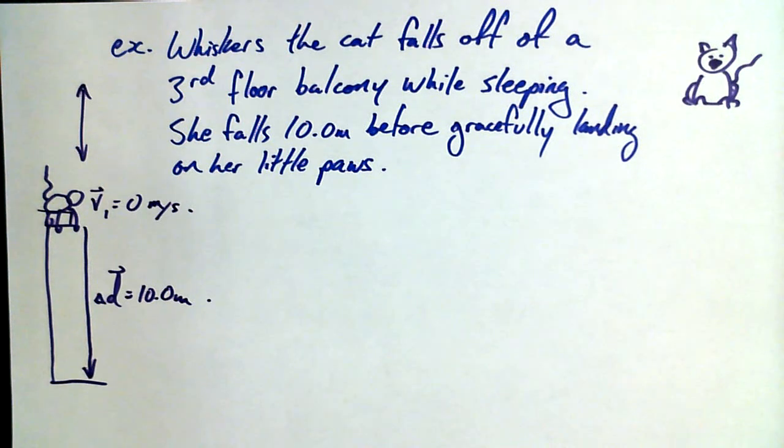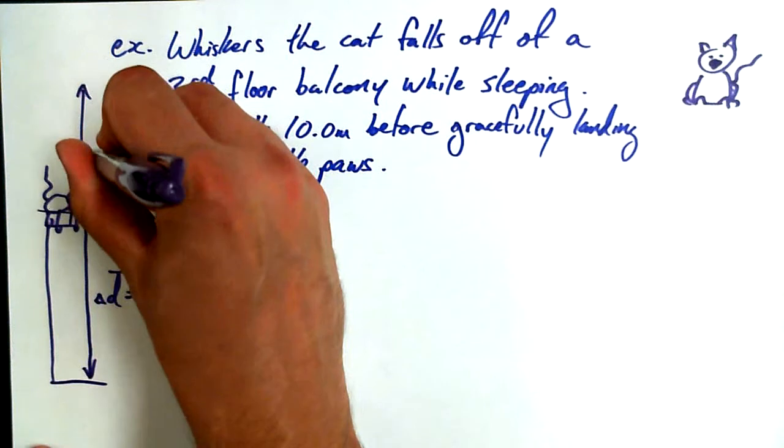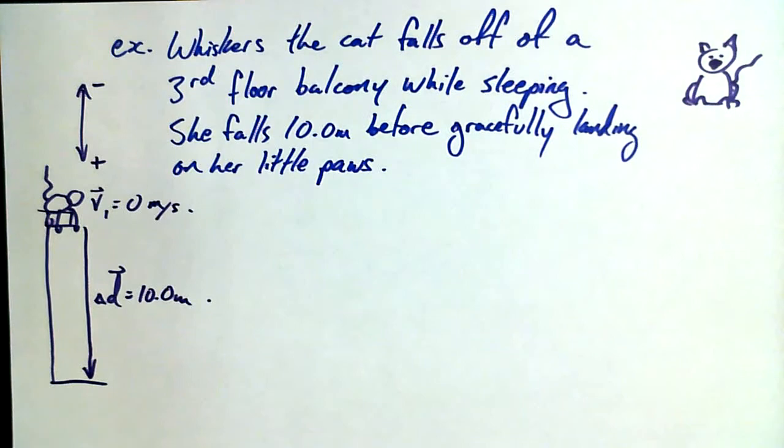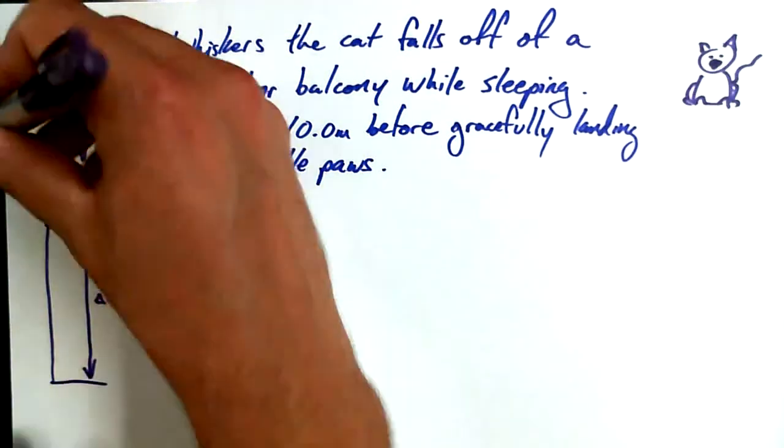I would recommend one particular direction to be positive in this case to make our lives easier. What direction do you suppose I would recommend? How many people say up? How many people say down? Okay, let the record state that the decision was unanimous for making down positive. Despite what the little kids might tell you, it's okay to make down positive sometimes.